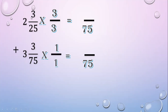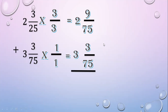Next, multiply the numerator. 3 times 3 equals 9. And for the second fraction, 3 times 1 equals 3. Copy the whole numbers. Now it's time to add. Add the whole numbers: 2 plus 3 equals 5. Add the numerators: 9 plus 3 equals 12. Copy the denominator: 75.